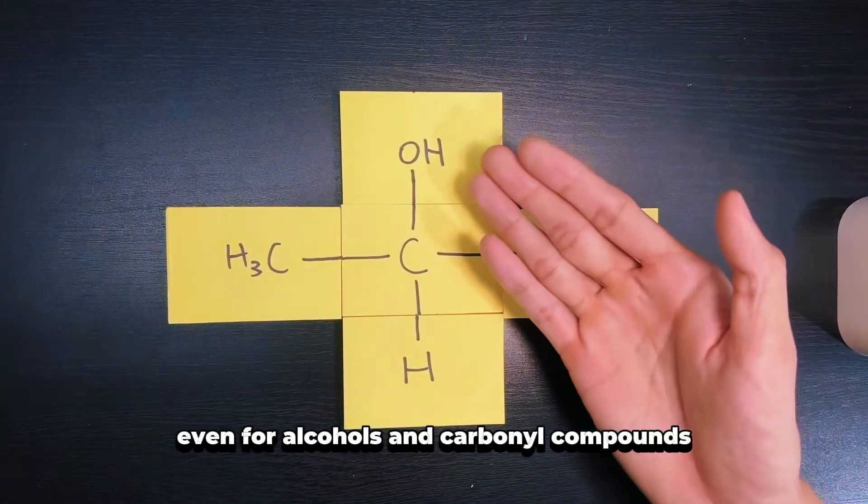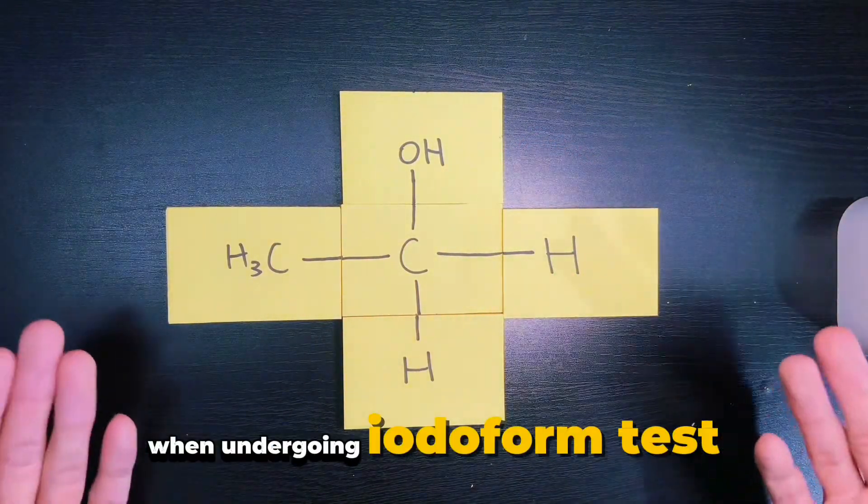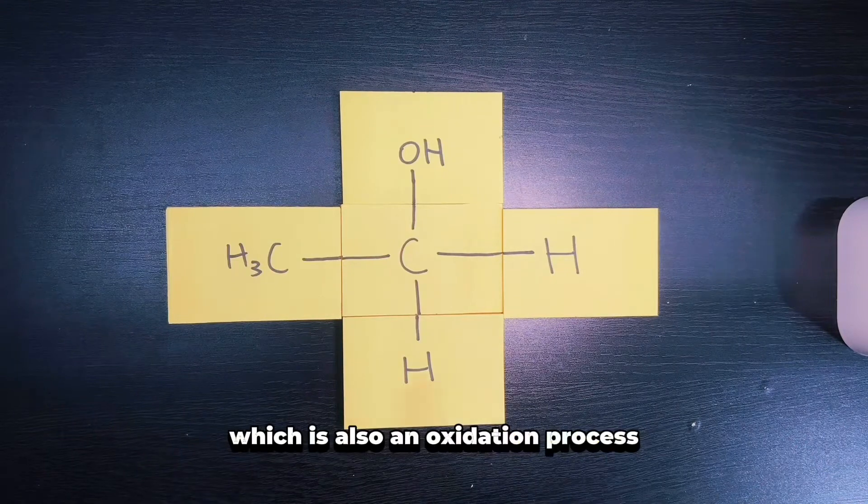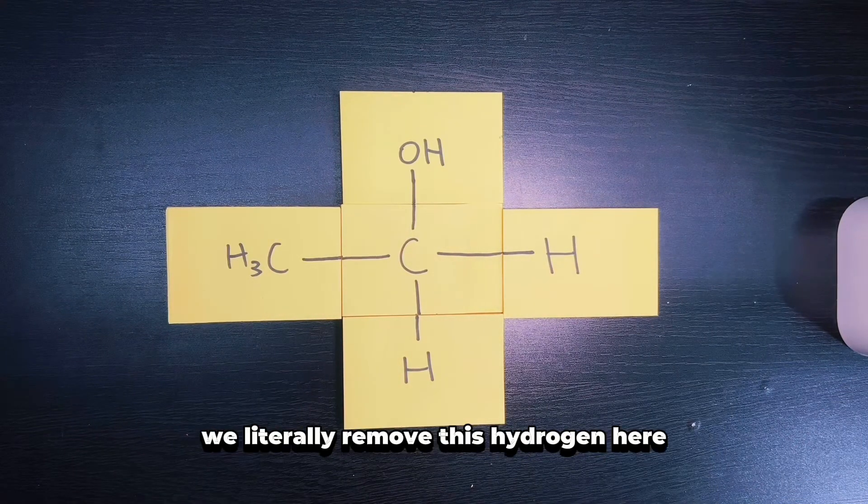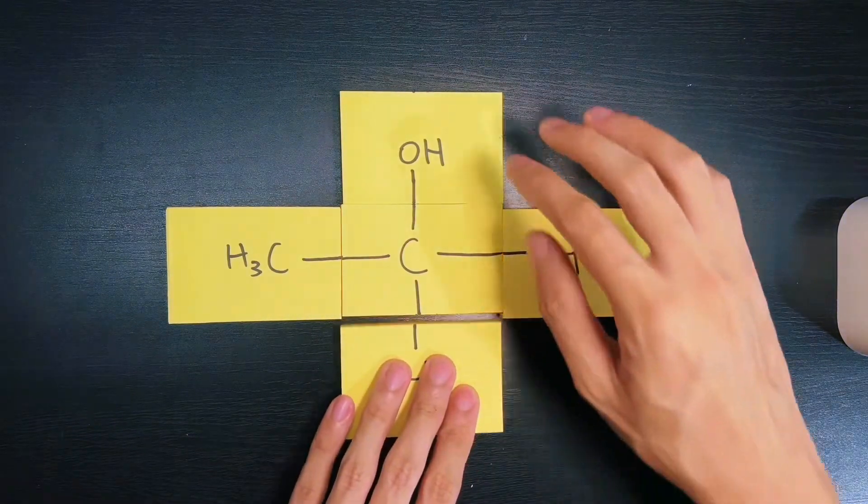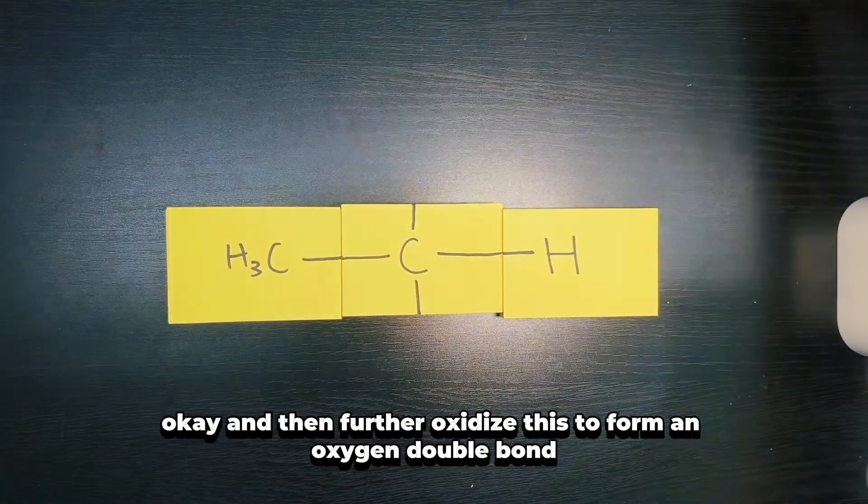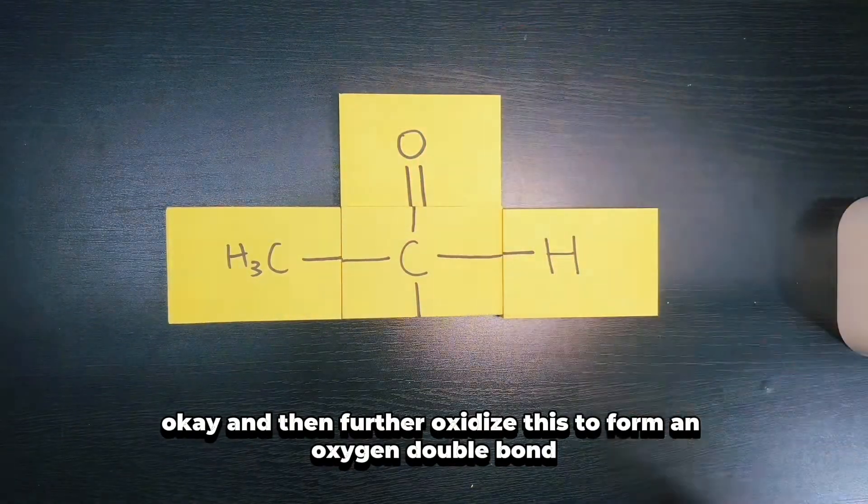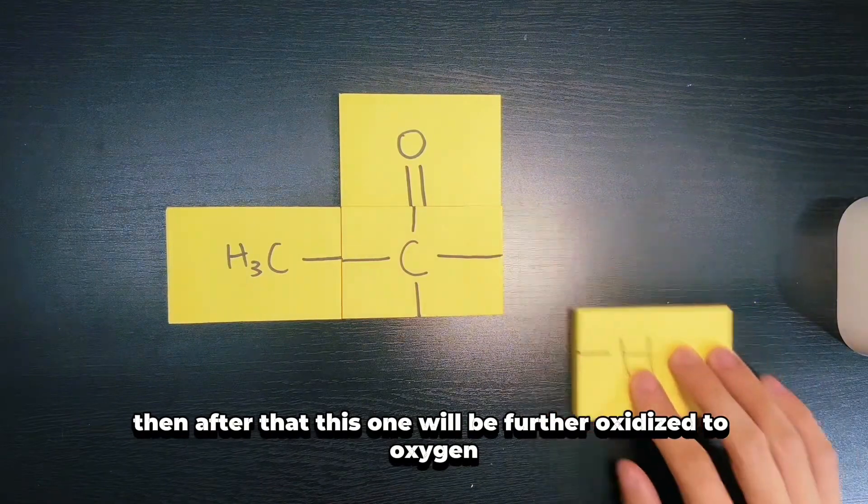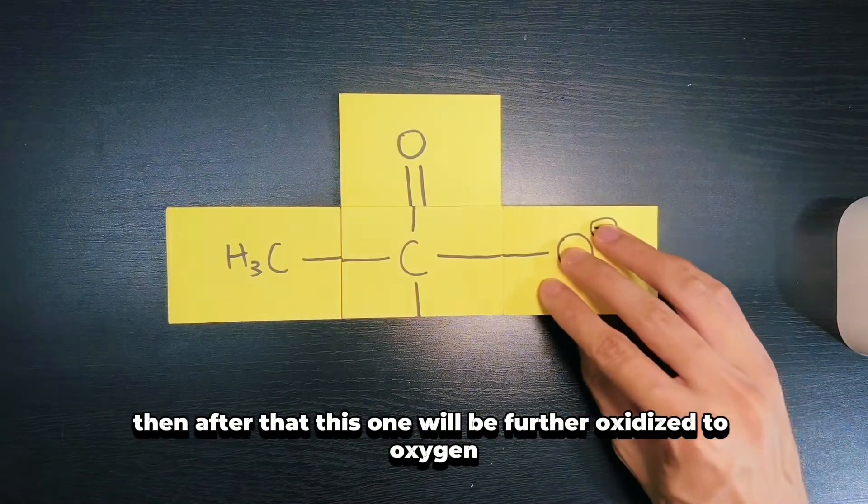Even for alcohols and carbonyl compounds when undergoing iodoform tests, which is also an oxidation process, we literally remove this hydrogen here and oxidize this to form an oxygen double bond. After that, this one will be further oxidized to oxygen.